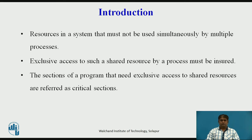There are several resources in a system that must not be used simultaneously by multiple processes, if program operation is to be correct. For example, a file must not be simultaneously updated by multiple processes. Similarly, use of unit record peripherals such as tape drivers or printers must be restricted to a single process at a time. Therefore, exclusive access to such shared resources by a process must be ensured. This exclusive access is called Mutual Exclusion between processes.